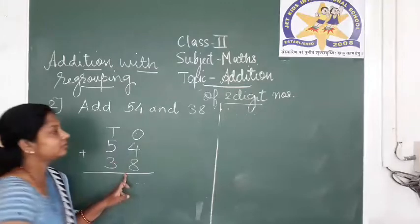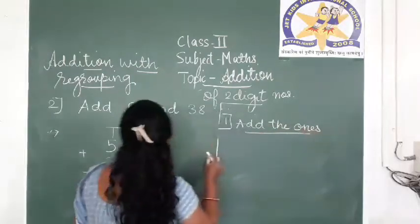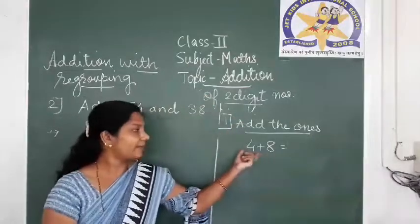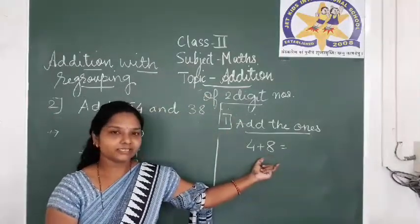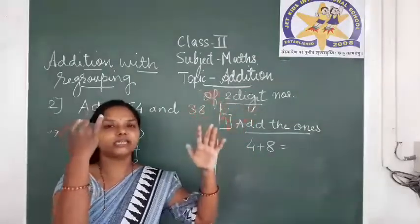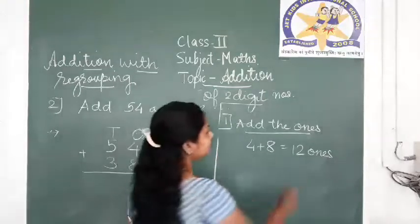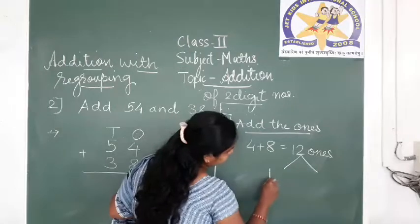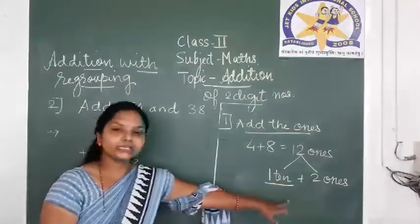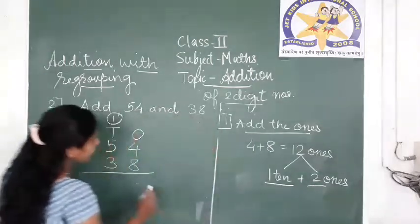Next step is to add the ones first. That is, 4 plus 8. Keep the upper number in your mind and count the lower number on your fingers. After 4, count 8 more: 5, 6, 7, 8, 9, 10, 11, 12. That is 12 ones. This 12 ones, we are going to regroup again. 12 ones can be represented as 1 ten plus 2 ones.